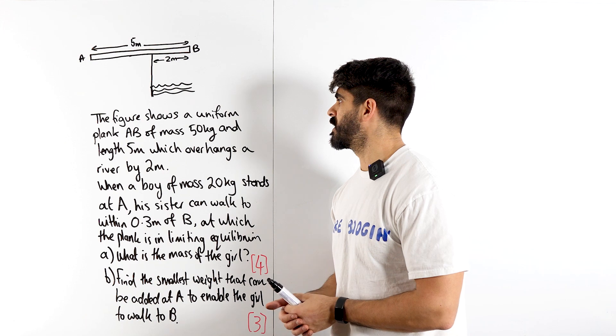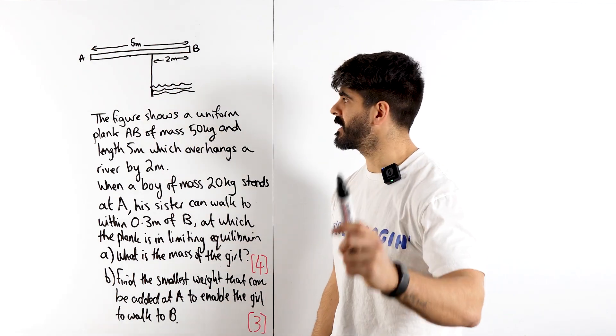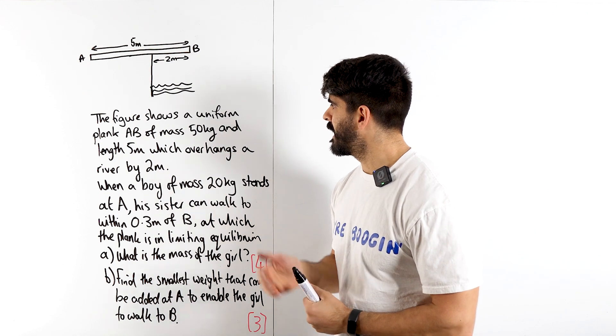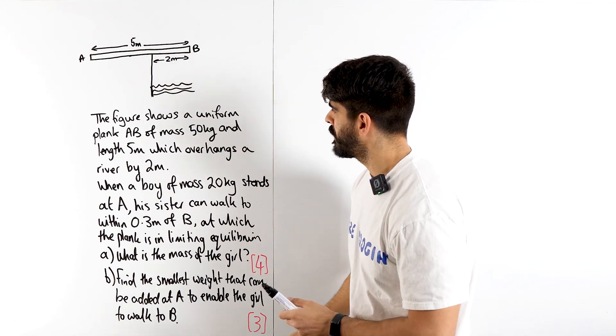The figure shows a uniform plank AB, uniform meaning that the center of mass acts down the middle. It has mass 50 kg and length 5 meters which overhangs a river by 2 meters.